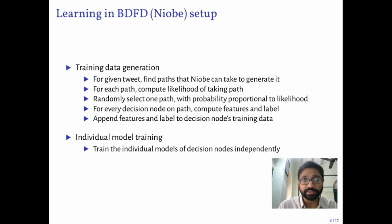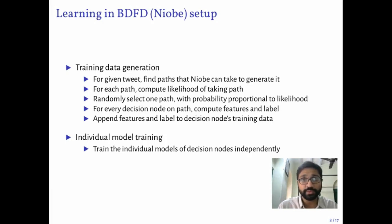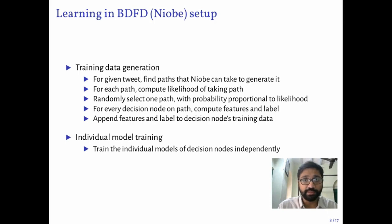However, in practice, repeatedly doing these steps is very computation intensive. As an approximation, we have tweaked the model so that only one path exists for a given tweet to be produced. For example, if a tweet mentioning the user is also present in his or her timeline, we assume he or she will be made aware of it via mentions first.